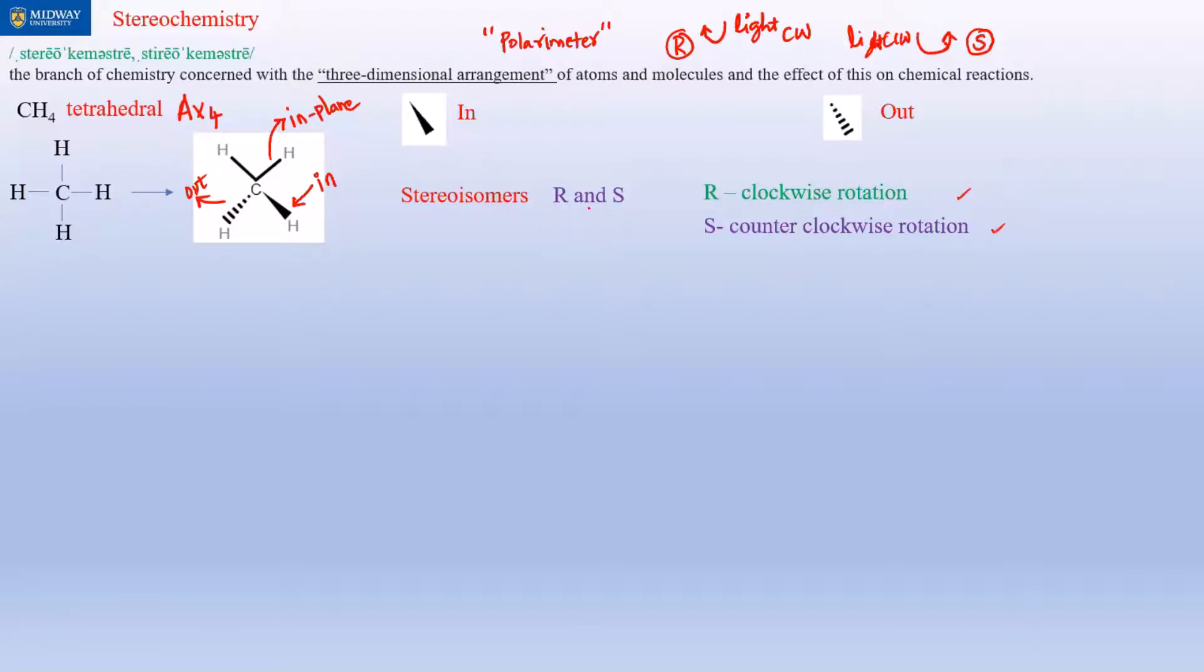That's where R and S comes in. What causes this R and S? Just because it's three-dimensional, does it automatically mean R and S? No, there's an important concept that determines whether the light rotates clockwise or counterclockwise in a polarimeter, and that concept is chirality.